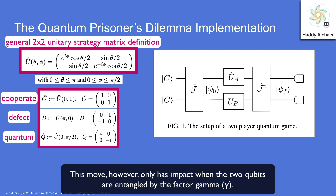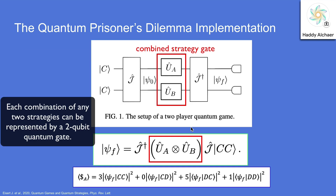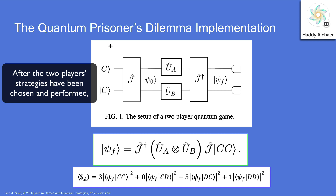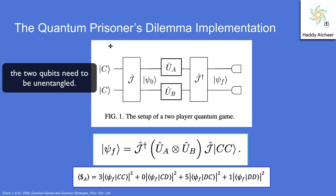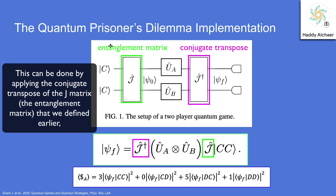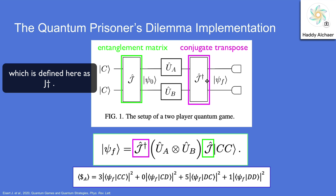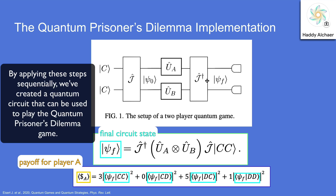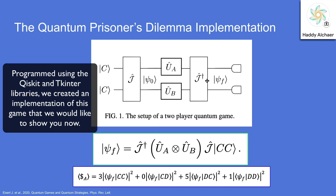One such strategy discovered in the paper was called the quantum strategy, defined by theta equals zero and phi equals pi over two. This quantum strategy has no classical definition and cannot exist in a classical game. This move only has impact when the two qubits are entangled by the factor gamma. Each combination of any two strategies can be represented by a two-qubit quantum gate — a four-by-four matrix created by taking the tensor product of the two strategy matrices. After the two player strategies have been performed, the two qubits need to be unentangled by applying the conjugate transpose of the J matrix, defined here as J-dagger. Lastly, we measure the state of the two qubits to determine the payoff.